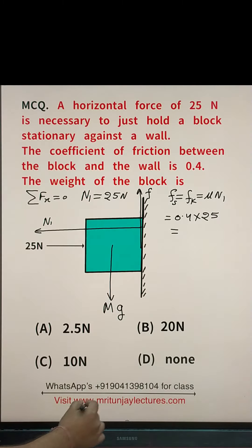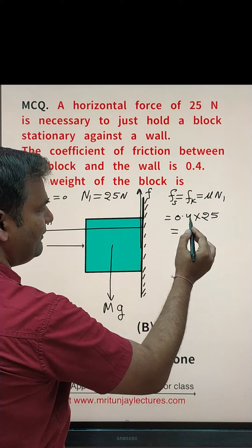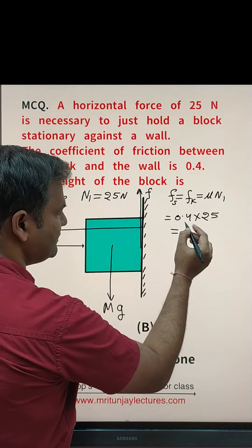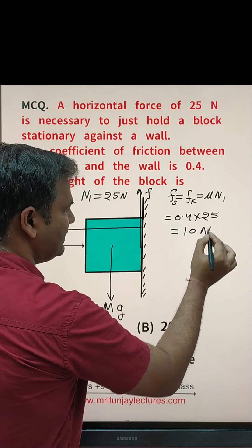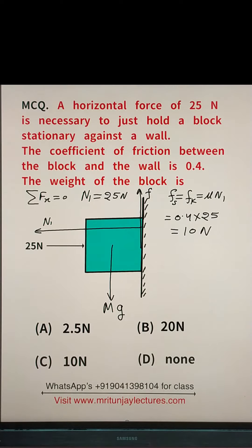So, that is 125 into 0.4. That is 100 means, that is 10 N. Basically, 10 N. 0.4 into 25, that is 10 N.